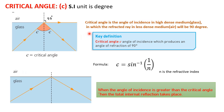Critical angle: the critical angle is the angle of incidence in the high dense medium at which the refracted ray in the less dense medium is 90 degrees. For example, the high dense medium is glass, and C is the angle of incidence at which the refracted ray is 90 degrees into the less dense medium — here, air. The formula for critical angle is C = sin⁻¹(1/N), where N is the refractive index. This formula is derived from the refractive index formula.